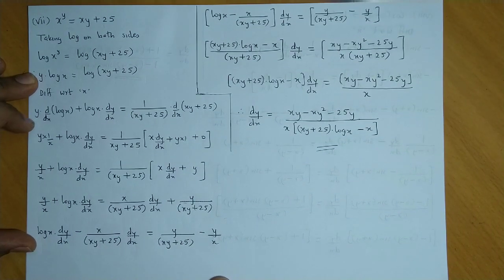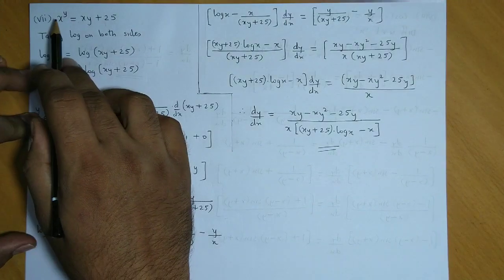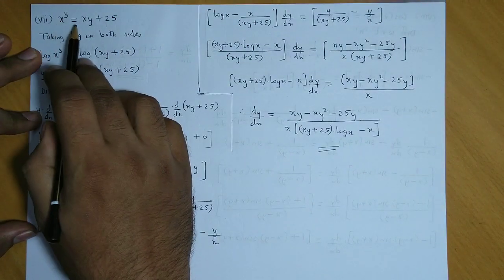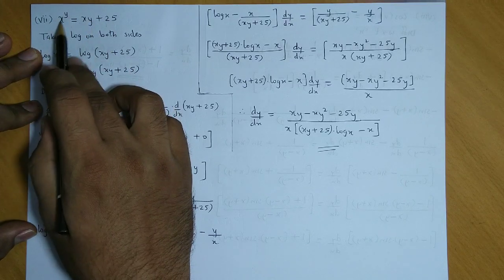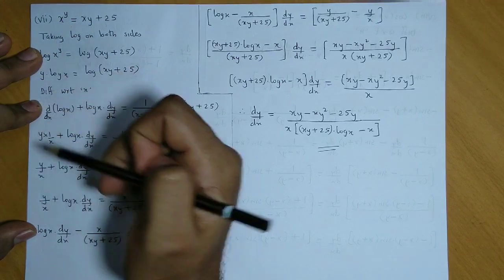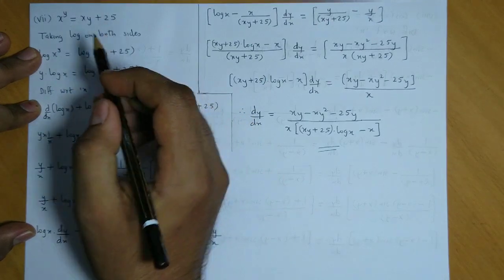Sub question number seven: x raised to y is equal to xy plus 25. Now here we have x raised to y term, so we have to take log on both sides.